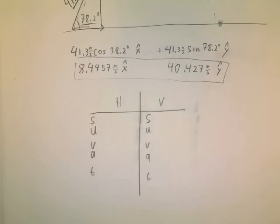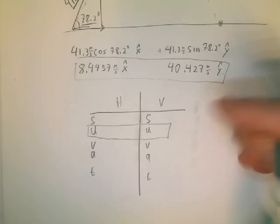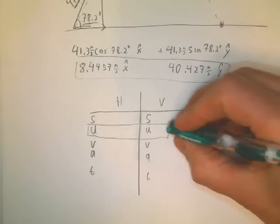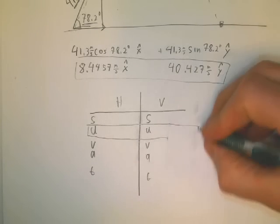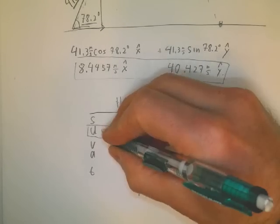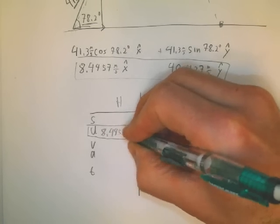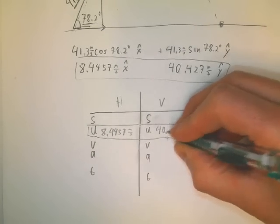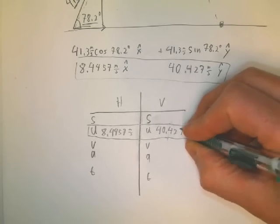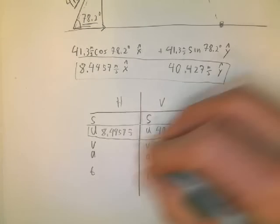This guy comes right down here, 8.4457 meters per second. This guy is 40.427 meters per second, and those are the initial velocities. In the horizontal direction, since there's no acceleration, this guy won't change.